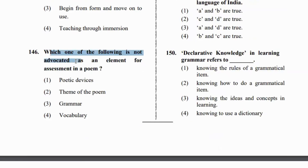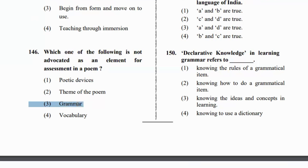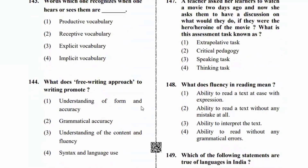Next question: which of the following is NOT advocated as an element for assessment in a poem? Poetic device will be used, theme of the poem will be used, vocabulary will be used. But if we talk about grammar — grammar will also be used in poem assessment.